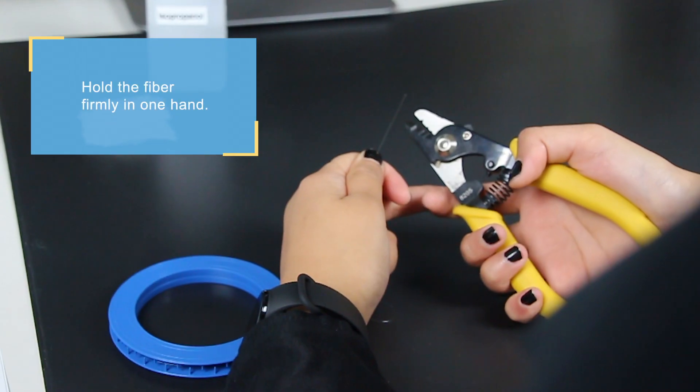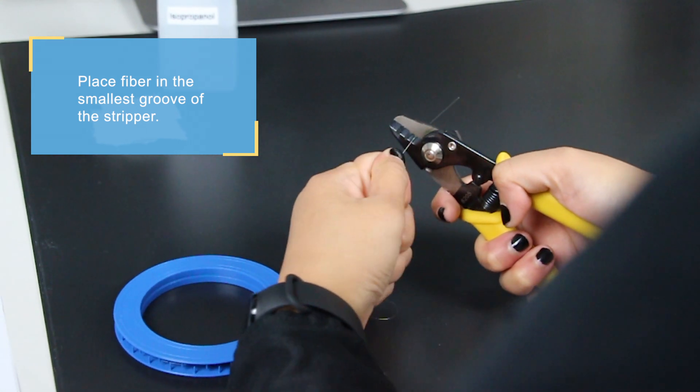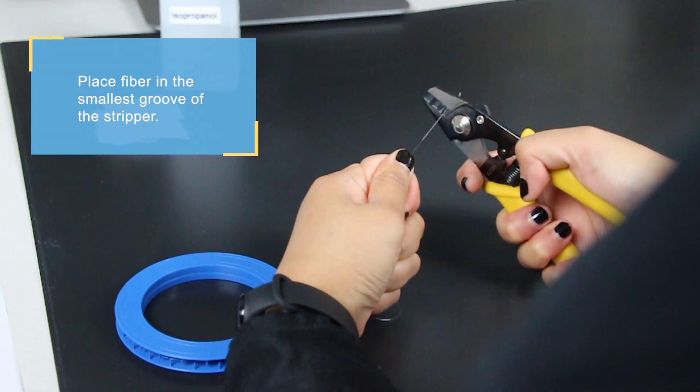Get a good grip on the fiber. Then place the fiber in the smallest groove of the stripper. Press firmly enough onto the Ormiser coating to have grip.